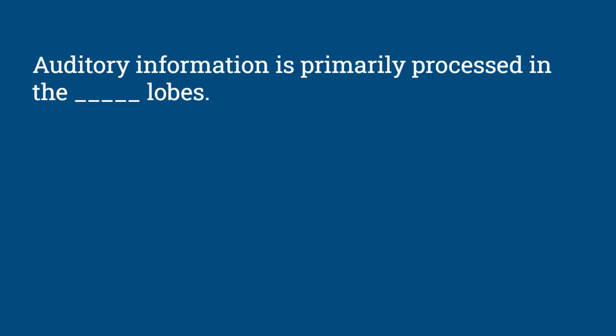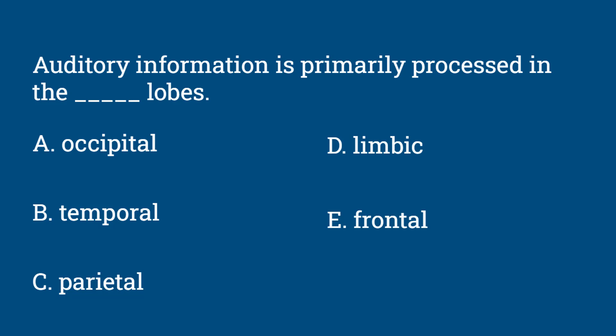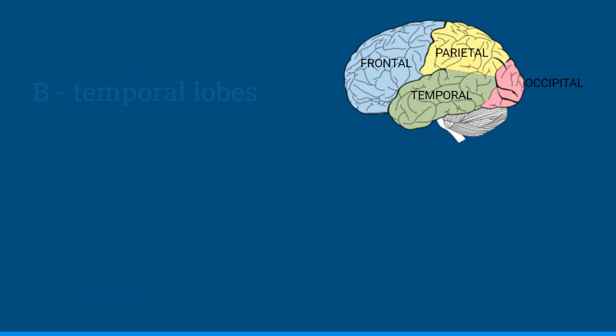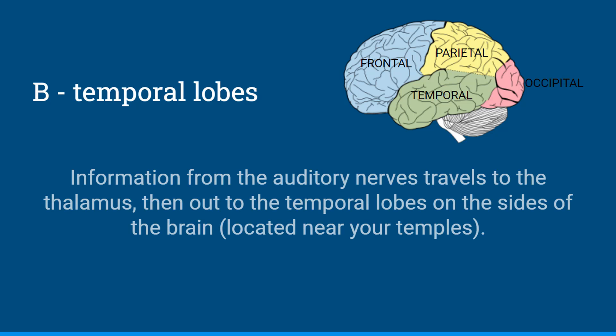Question 6: Auditory information is primarily processed in the blank lobes. Is it the occipital lobes, the temporal lobes, the parietal lobes, the limbic lobes, or the frontal lobes? The answer is B, the temporal lobes. Information from the auditory nerves travels to the thalamus, and then from the thalamus out to the temporal lobes on the sides of the brain — you can remember those are located near your temples.